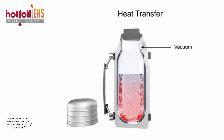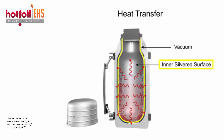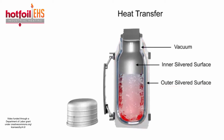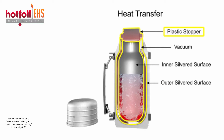Heat loss by radiation is prevented by the silvered walls reflecting radiant energy back into the thermos. Some conduction of heat through the stopper and glass can be expected, but this too is limited because they are made of materials with very low conductivity.